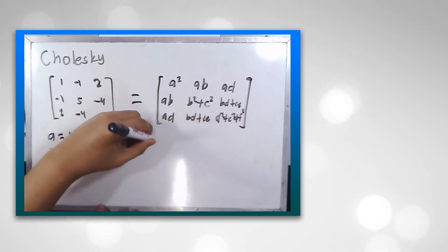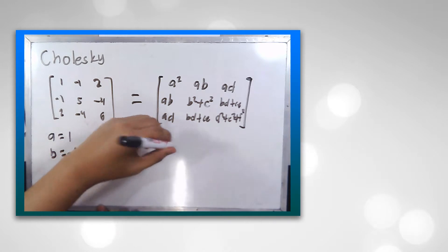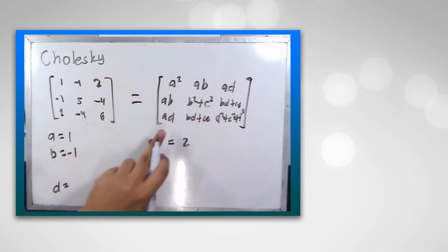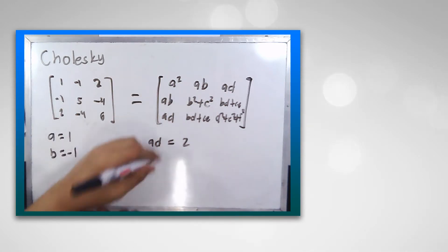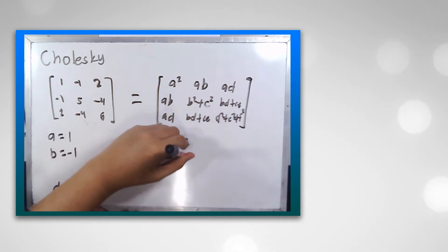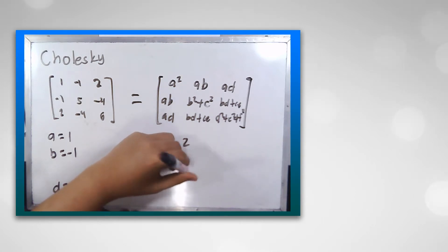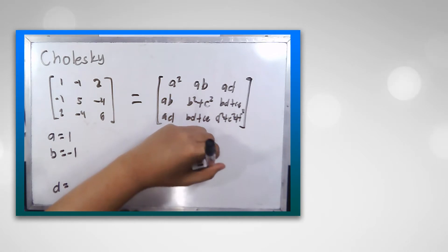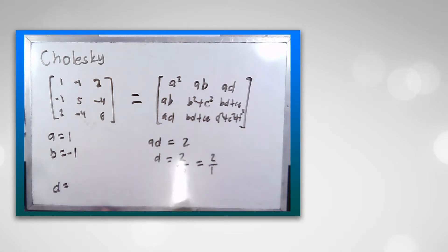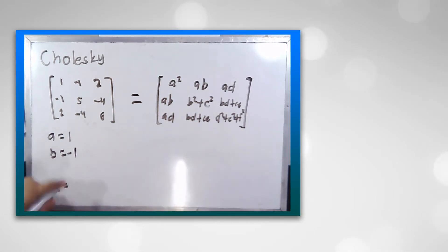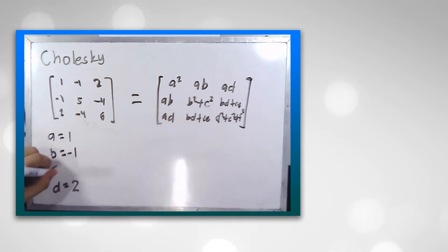Now let's go for d. a*d is equal to 2, so d is equal to 2 over a. We know the value of a is equal to 1, therefore d is equal to 2 over 1, which is 2. Let's proceed now for c.